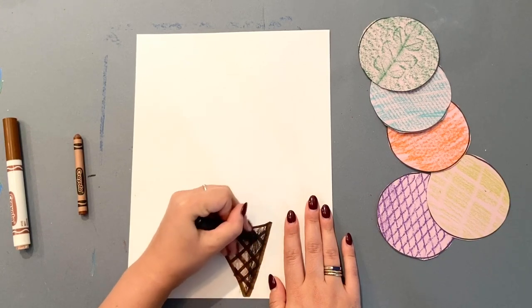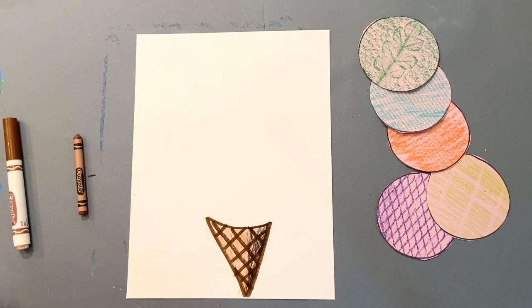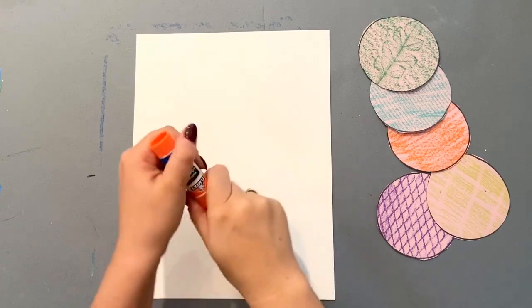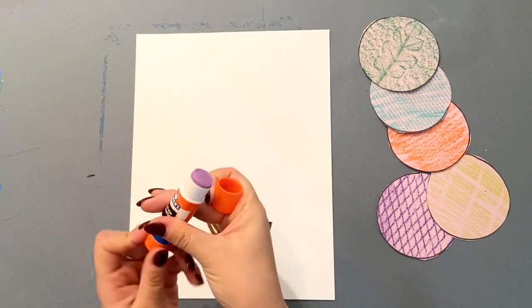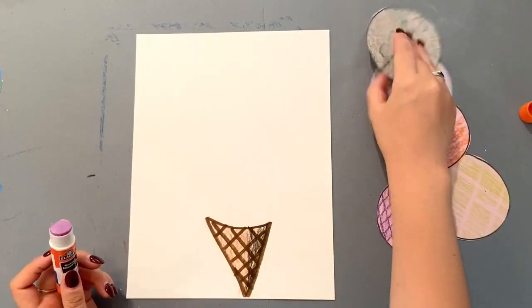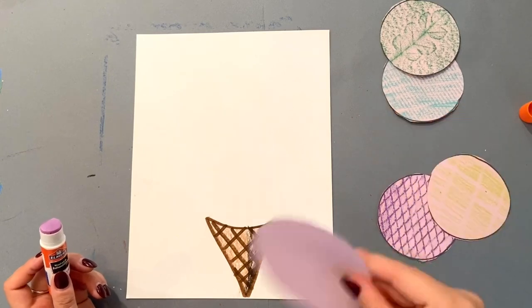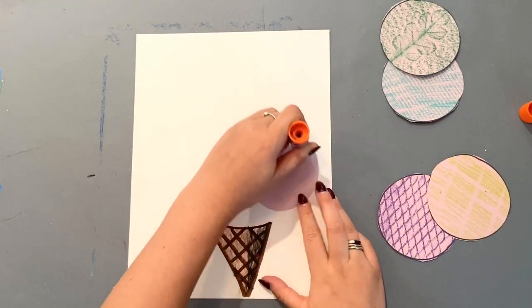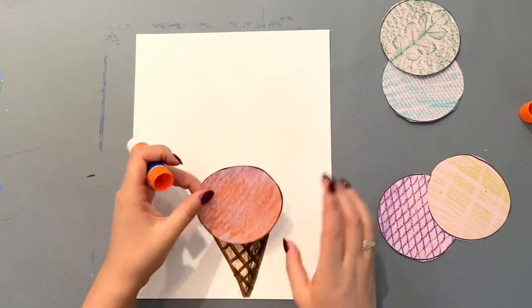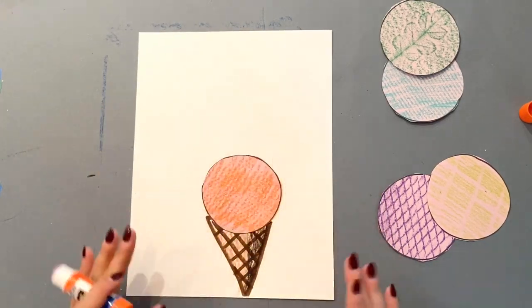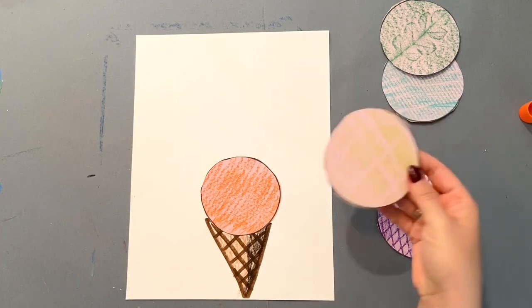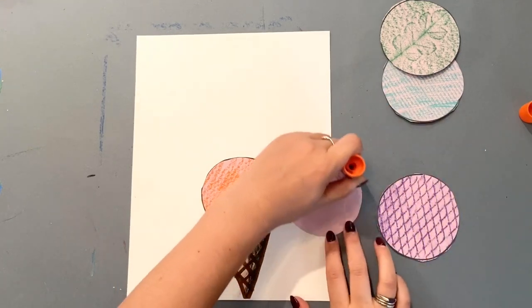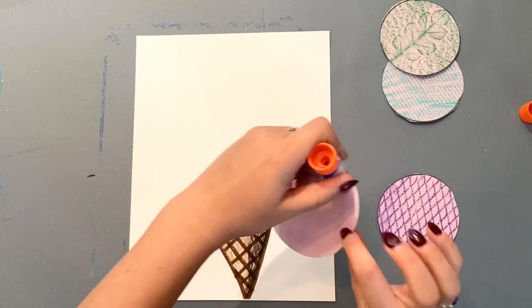It's time to glue all your scoops together. Pick one of your circles with textures, flip it over, and go around the edge of your circle. Then place it so that it's overlapping with the cone. Pick another one, glue around the edge.